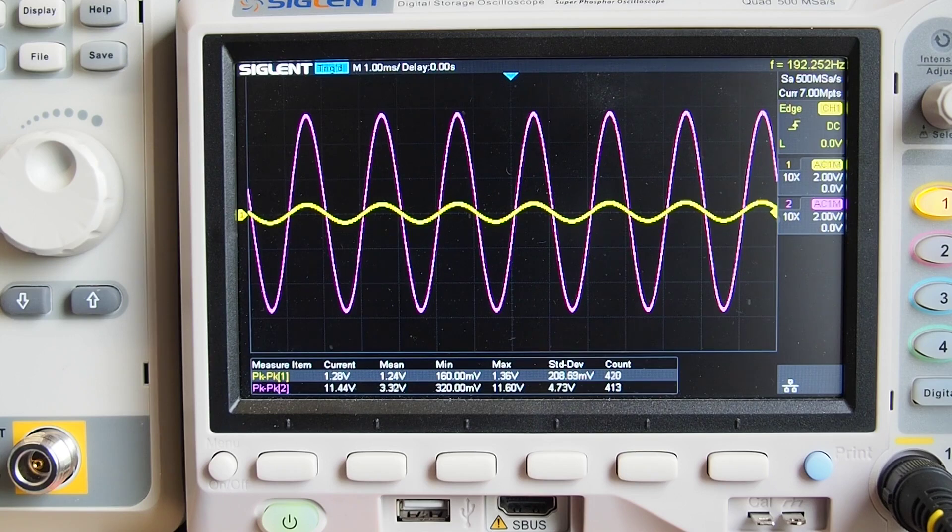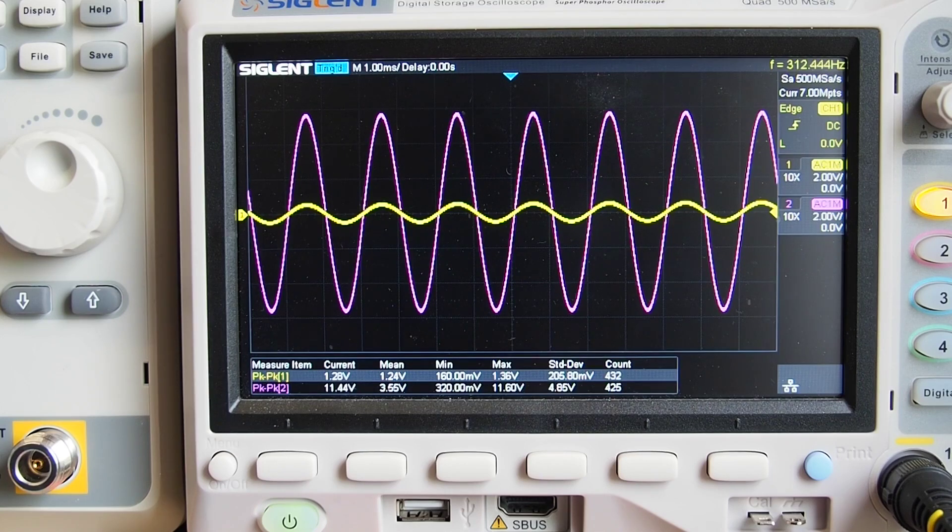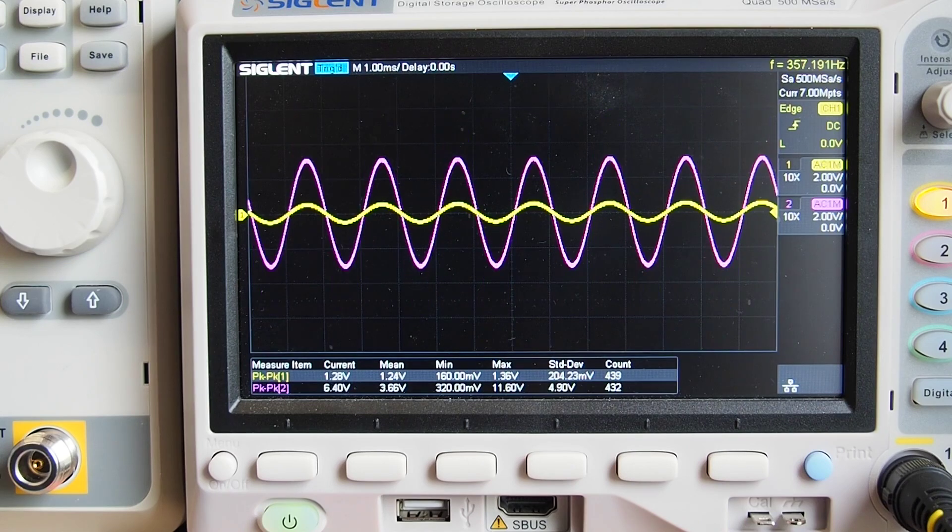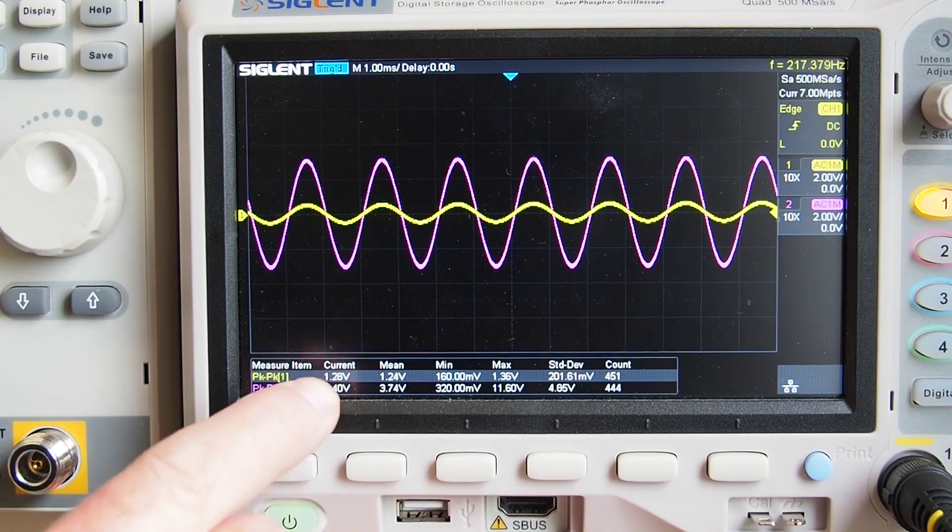So now what I'm going to do is press that push button switch in a moment, put the second 100k resistor in parallel with the original one, which will give us a total resistance of 50k. So I'm going to do that now.